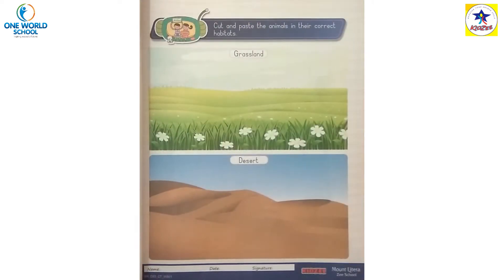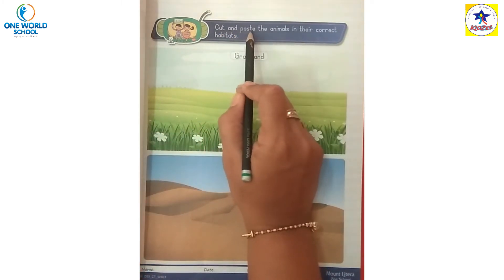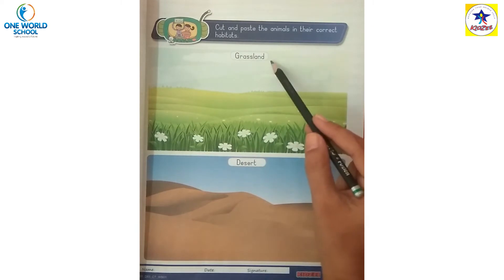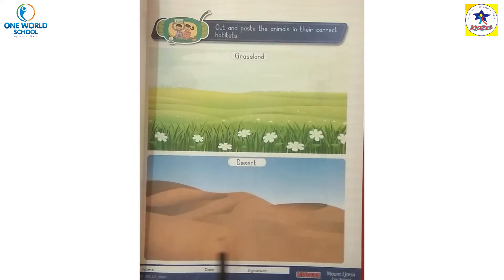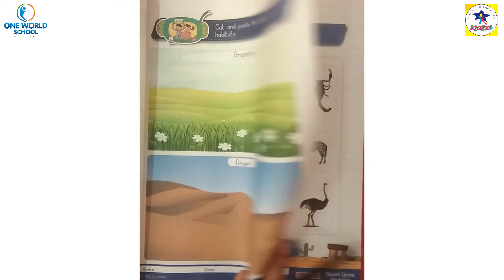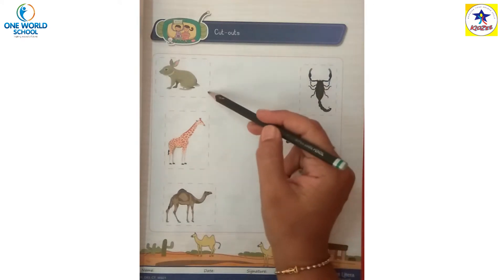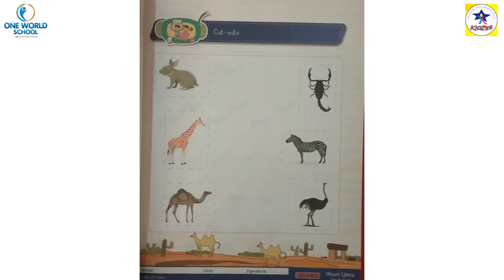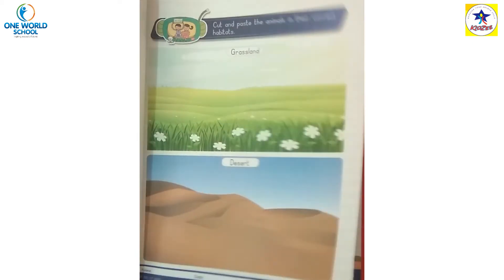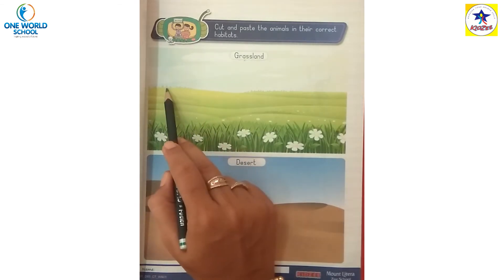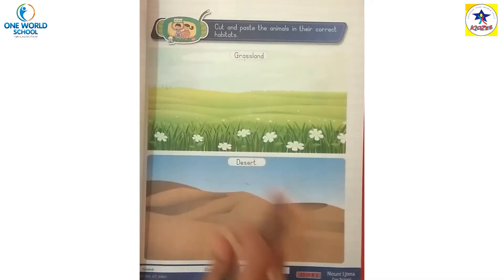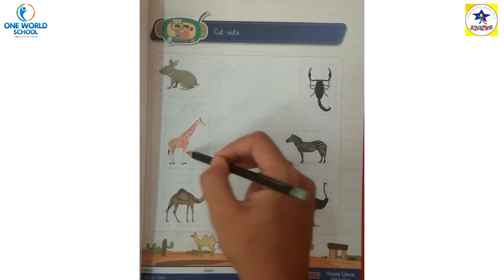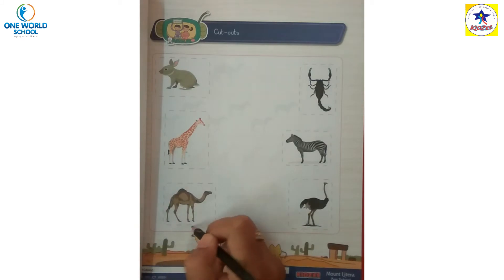Now the next page is cut and paste the animals in their correct habitats. Here you have a grassland area and the second picture is a desert area. You will have to cut and paste the animals in their right place. For example, rabbit is grassland - paste rabbit in your right place. Then giraffe - giraffe is grassland. Camel is desert.